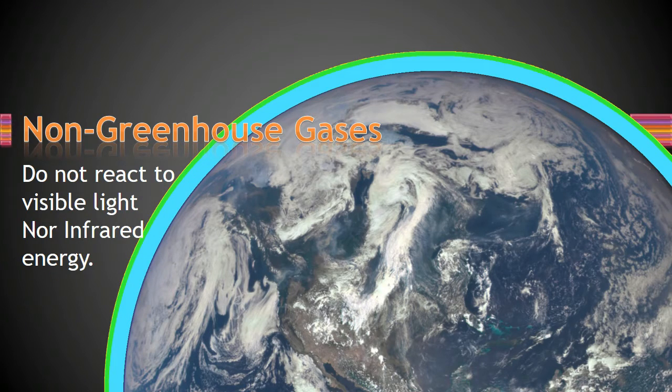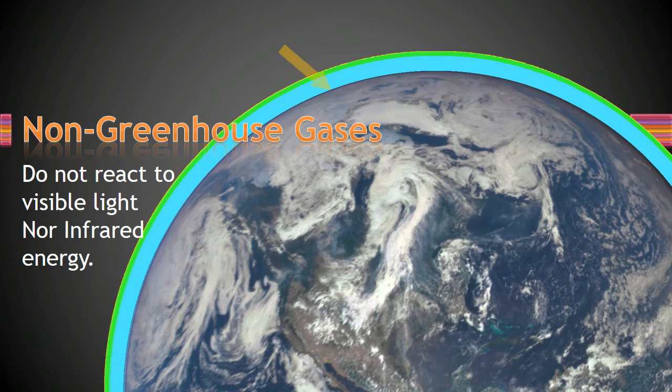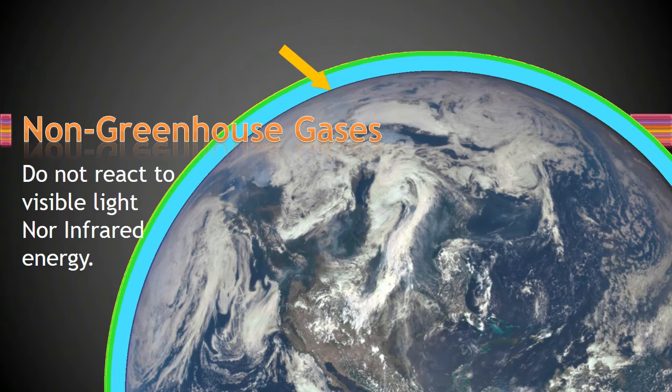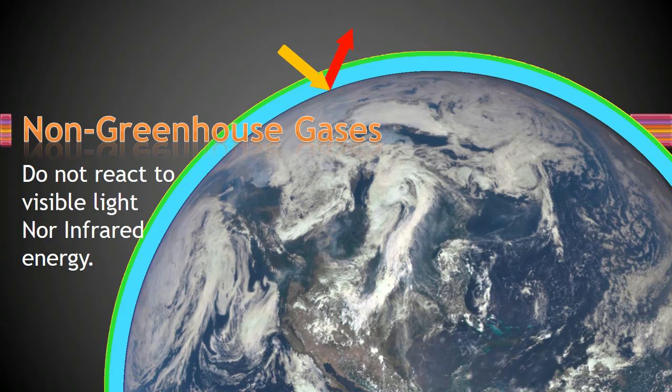These gases do not react to visible light nor infrared energy. That means that sunlight passes through them unhindered and strikes the surface of the Earth, warming it. Earth then transforms that light energy into infrared energy and radiates it back out into space.